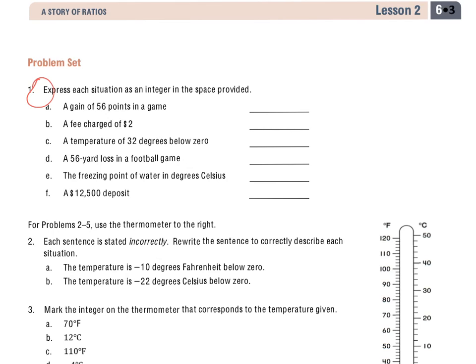We have express each situation as an integer in the space provided. An integer is either going to be a positive, a negative, or a zero. When I look at A, I have a gain of 56 points in a game. When we look at gain or loss, gain is going to mean positive, loss is going to be a negative. So I can put my answer as 56 or positive 56.